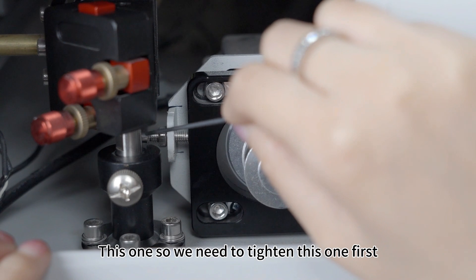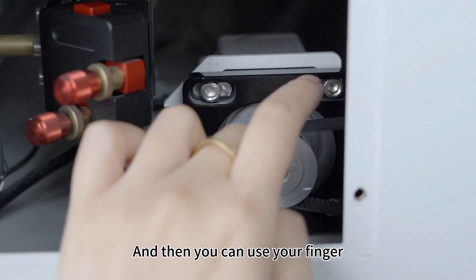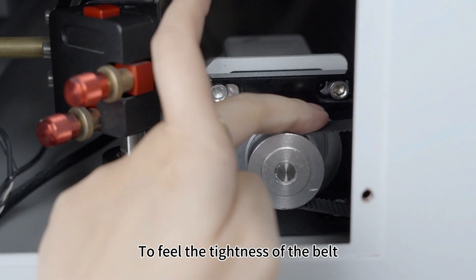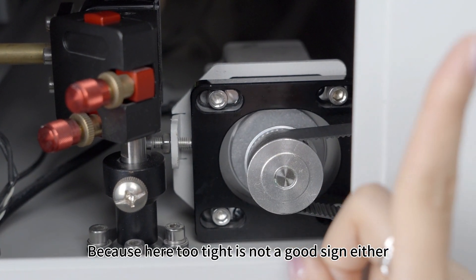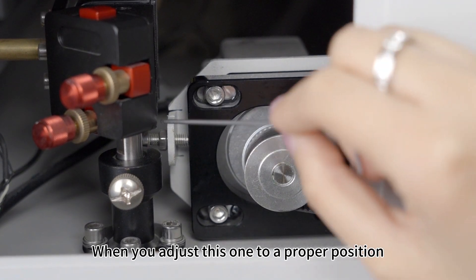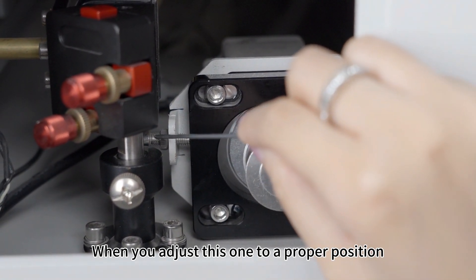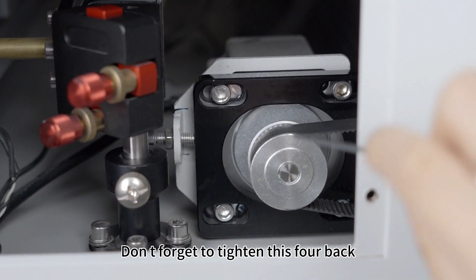So we need to tighten this one first, and then you can use your finger to feel the tightness of the belt. Too tight is not a good sign either. When you adjust this one to a proper position, don't forget to tighten these four back.